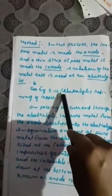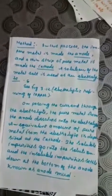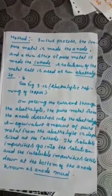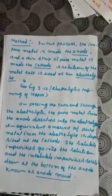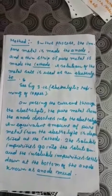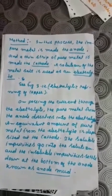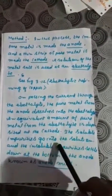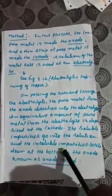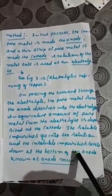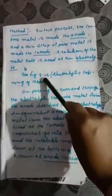On passing current through the electrolyte — refer to figure 3.12 in your book — pure metal from the anode dissolves into the electrolyte, and an equivalent amount of pure metal from the electrolyte is deposited at the cathode. This is how the metal is purified. Soluble impurities go into the solution, and insoluble impurities settle at the bottom of the anode — this is known as anode mud.